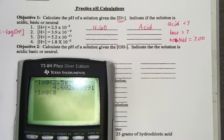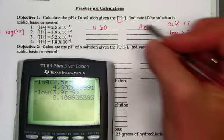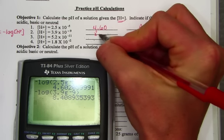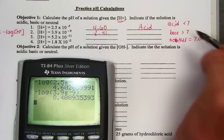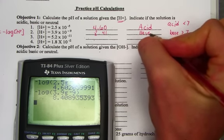Hitting for number 2, the negative log of 3.9 E negative 9 shows a value with 2 decimal places, 8.41. That value is above the 7, so it is considered a base.